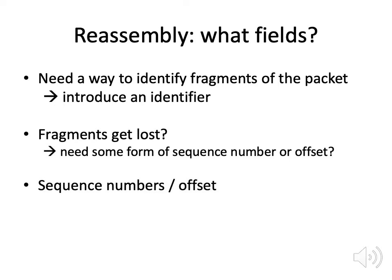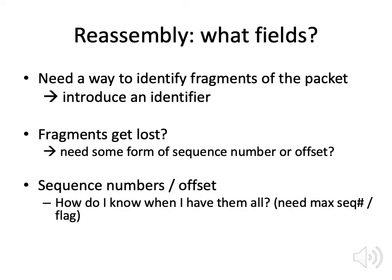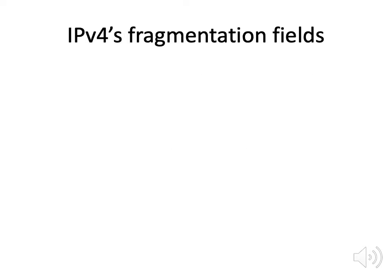When choosing between a sequence number and an offset, how do we know if we have them all? With sequence numbers, if one gets lost we need a maximum sequence number to know how many there are. We also have to worry about refragmentation — a fragment with a sequence number that gets fragmented again. This leads us to wanting to use an offset instead, saying what offset and how many bytes we have.